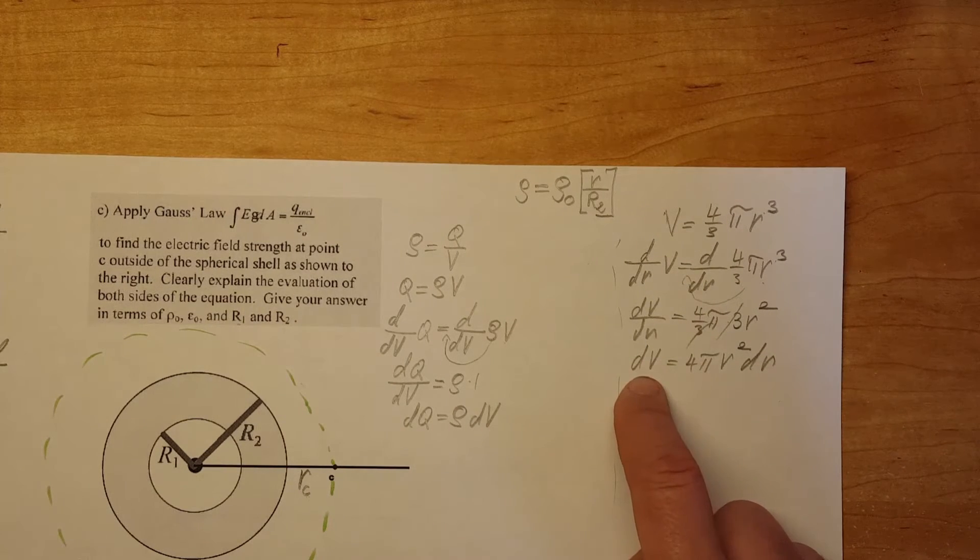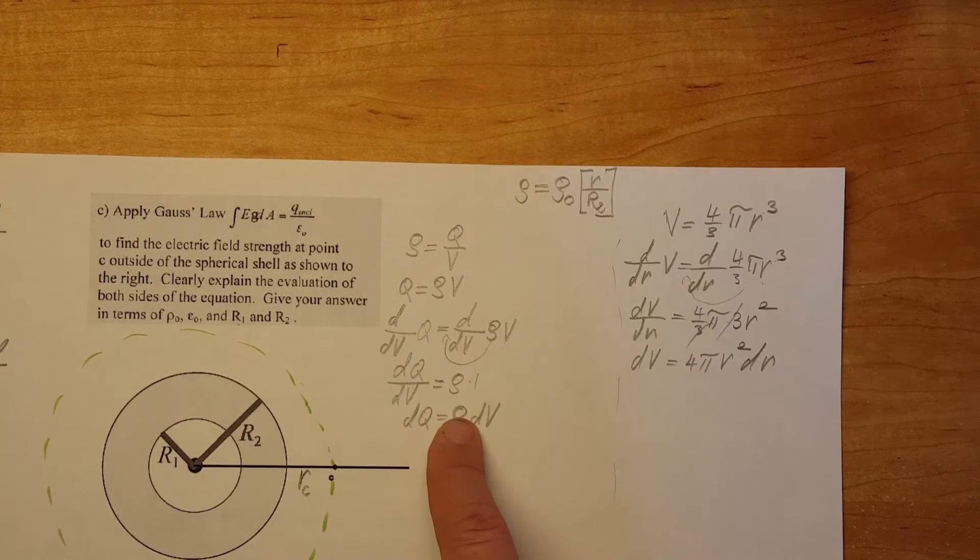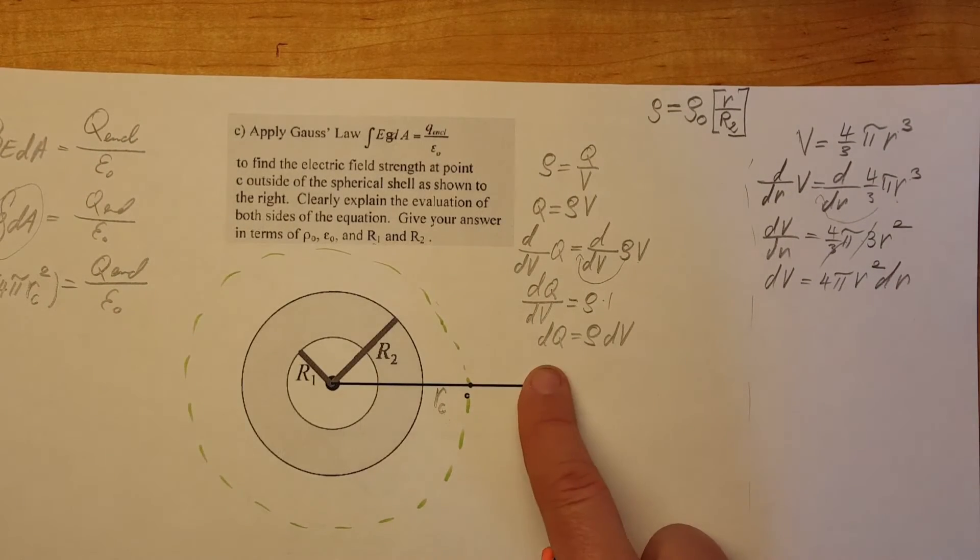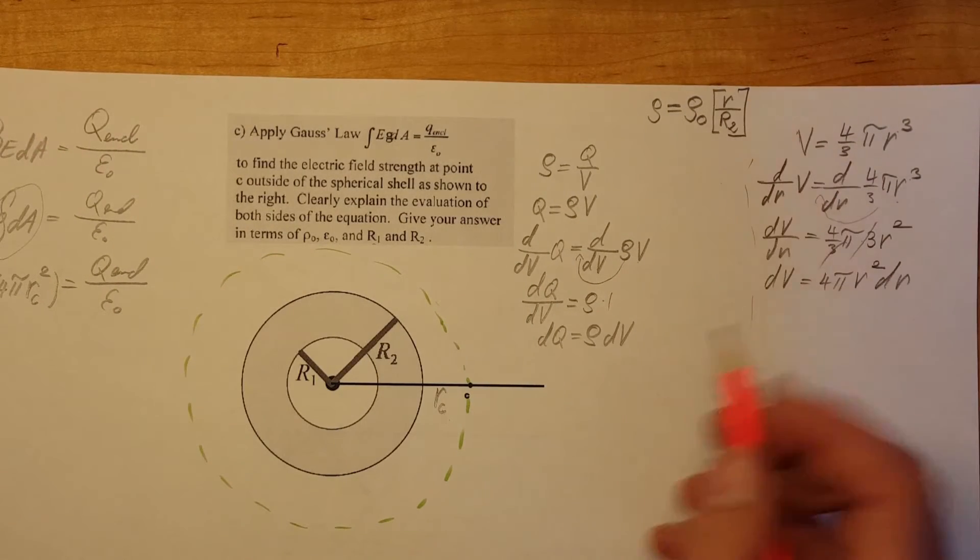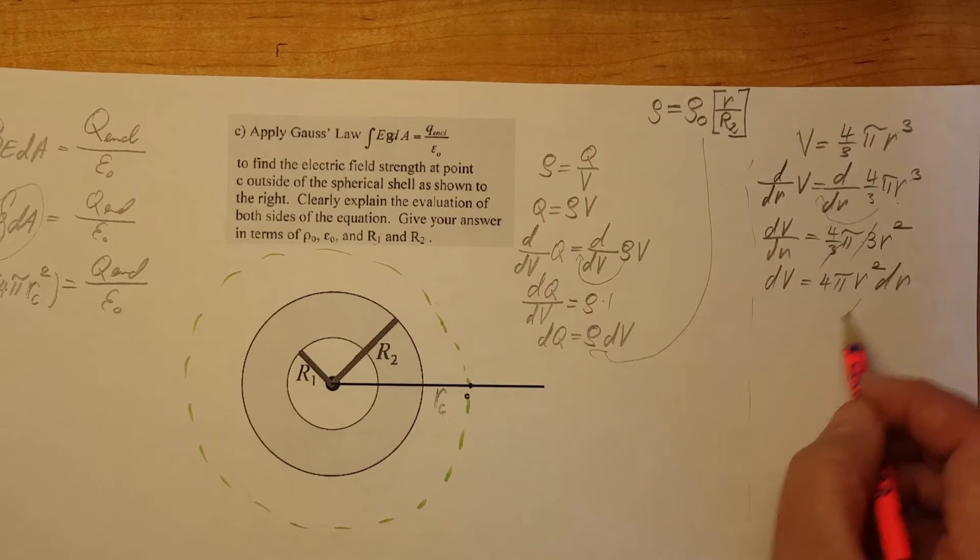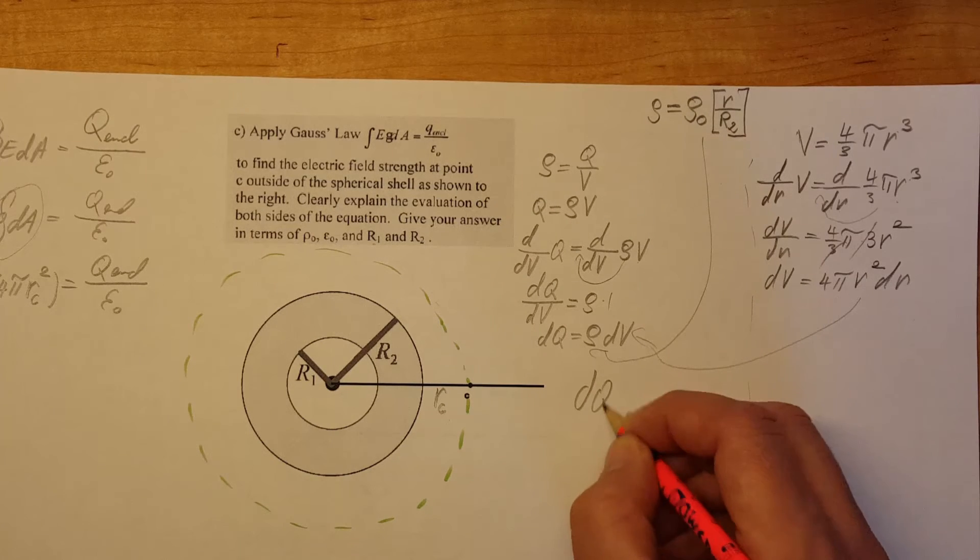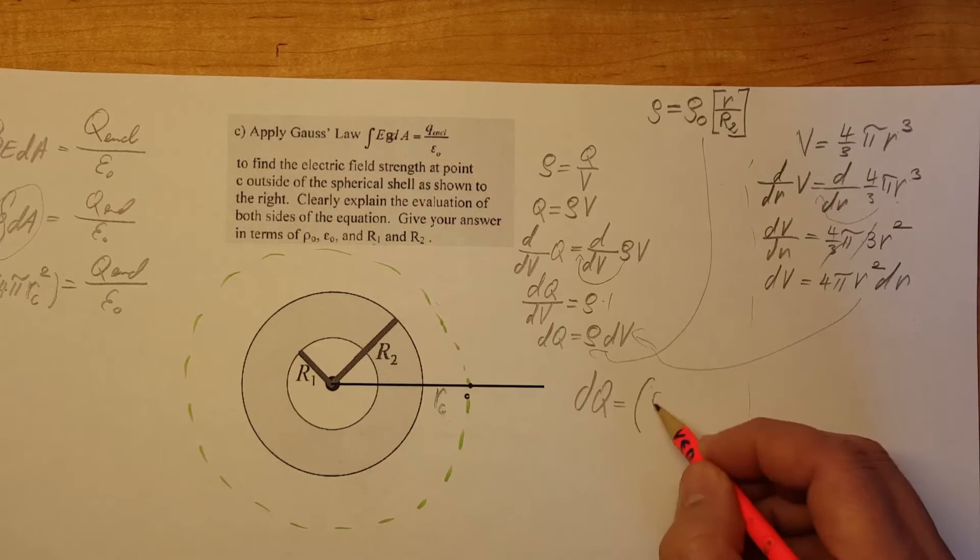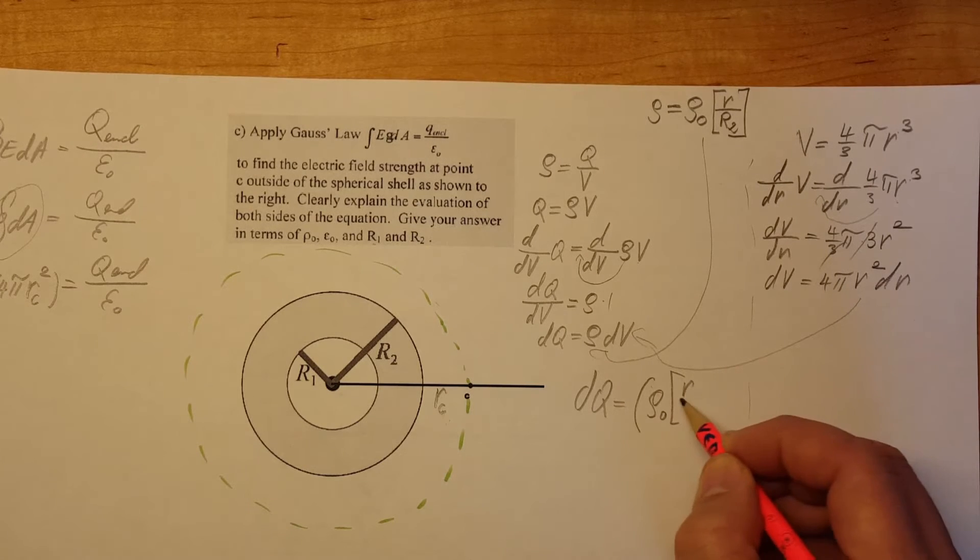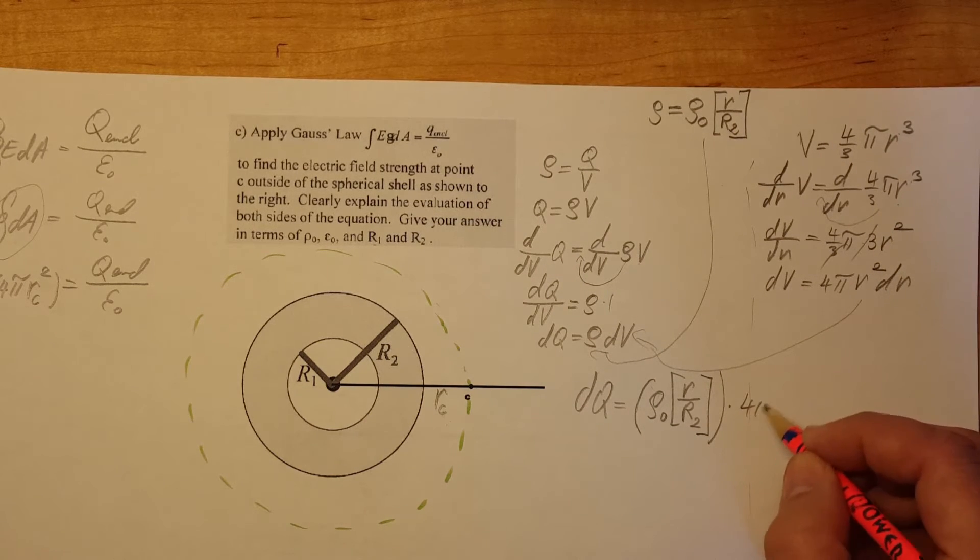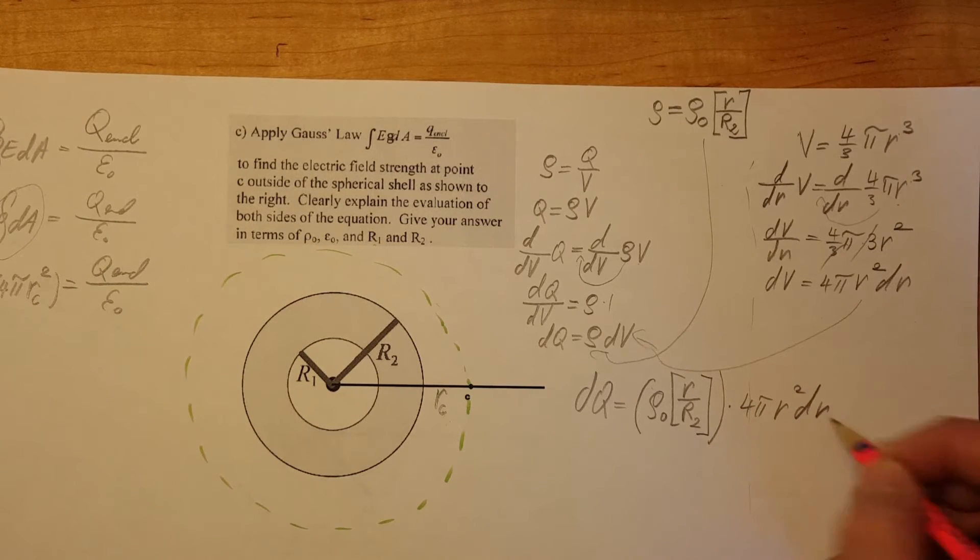Now we have a nice replacement for our dV and for our Rho we have our formula given. Now we're going to come to our dQ and plug these two in. We're going to bring this plug it in we're going to bring this and plug it in. So dQ equals Rho 0 times R over R2 times 4 pi r squared dR.